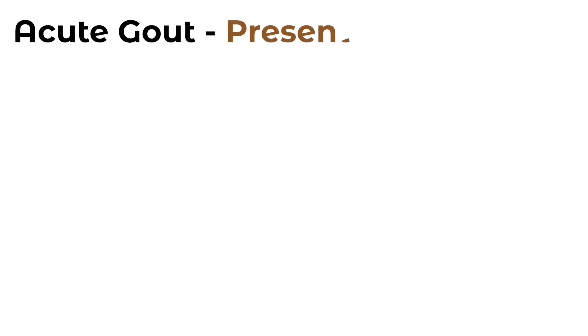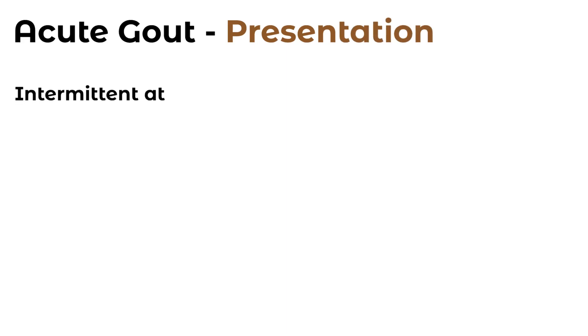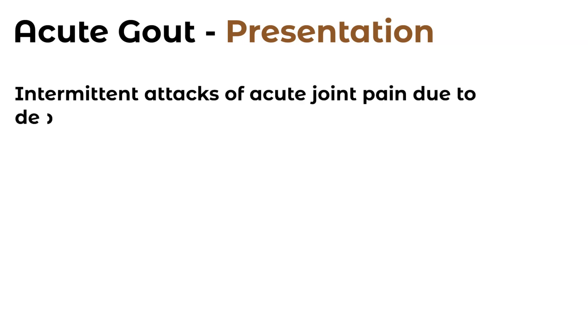Now that we went over causes of hyperuricemia, we'll go over some predisposing factors that we covered in the last video on gout — things like surgery, family history, obesity, hyperuric diet, polycythemia, leukemia, diuretics, acute infection, and so on.